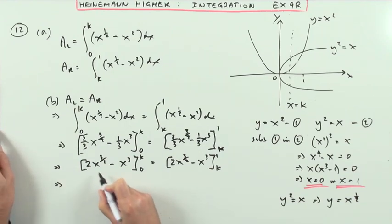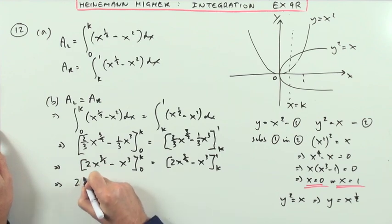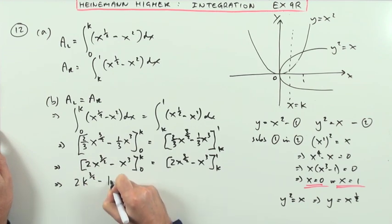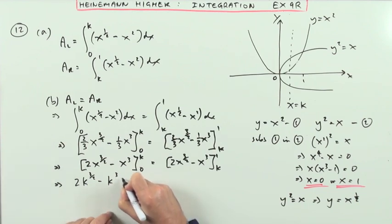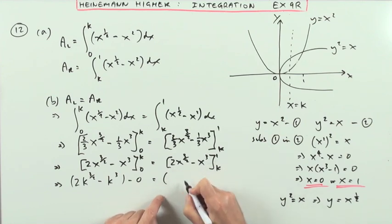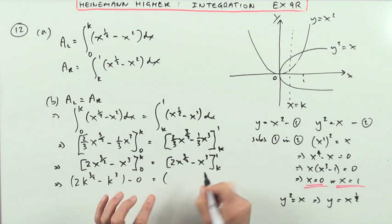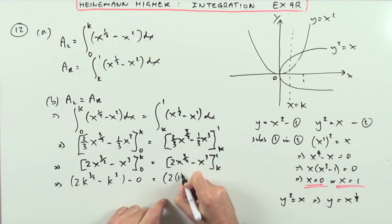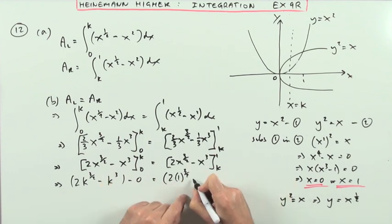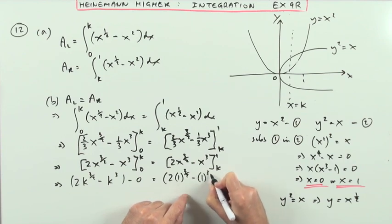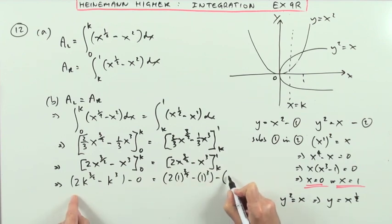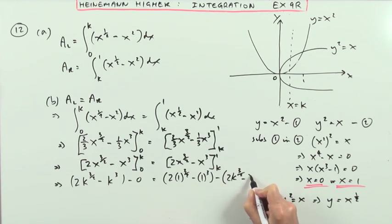Right. So what does that give you then? So it means working out at k. I'm not going to put the bracket. I'll just go straight in with it. So I've got 2k to the 3 upon 2 minus k cubed. I'll put minus 0 just now. Equals. Now if x is 1, it's just going to be 2 times 1. I'll have to put the working in. 2 times 1 to the 3 upon 2. But 1 to the power anything is just 1. Minus 1 cubed. Minus the same thing over here. 2k to the 3 upon 2 minus k cubed.